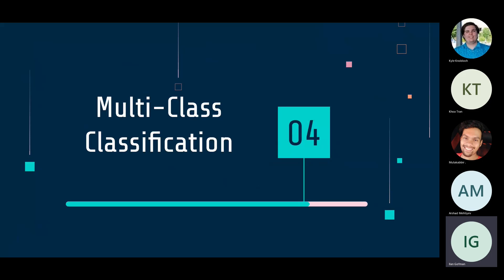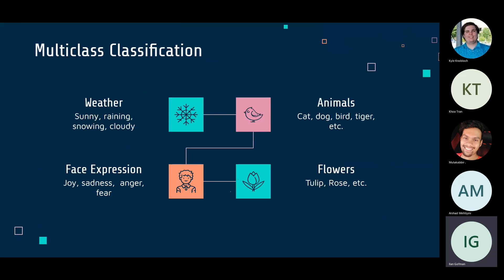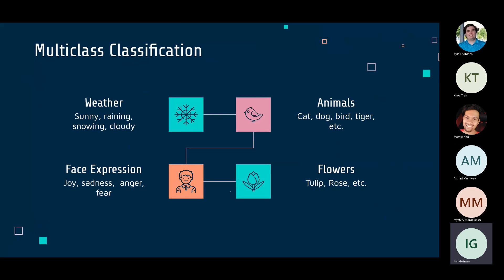Logistic regression as described works for binary classification. For multi-class classification the approach is very similar with a few extra steps. Multi-class applies when predicting from a discrete set of more than two options — for example, predicting weather (sunny, raining, snowing, or cloudy), identifying an animal in a picture, recognizing a facial expression, or classifying a flower species.